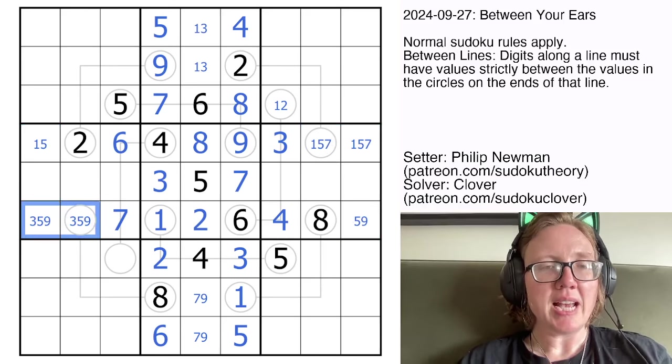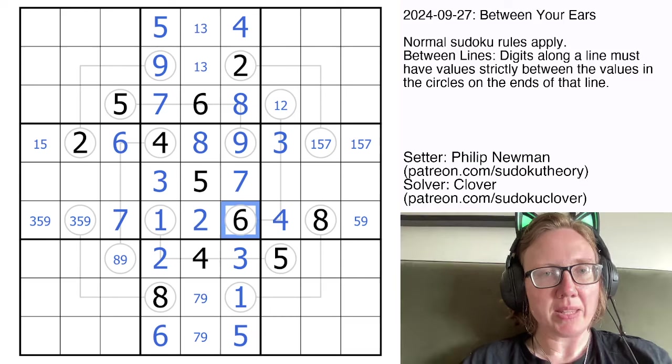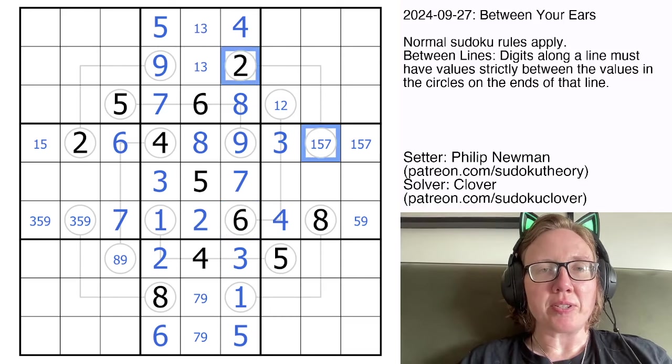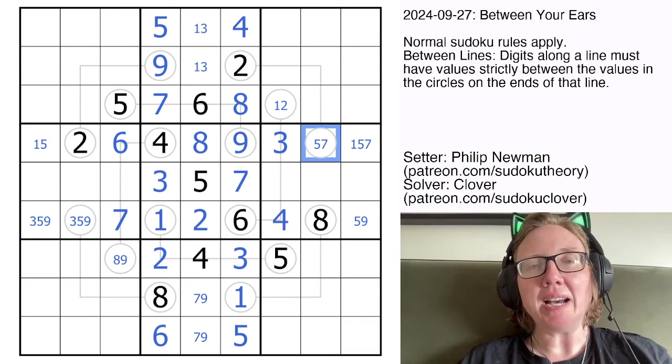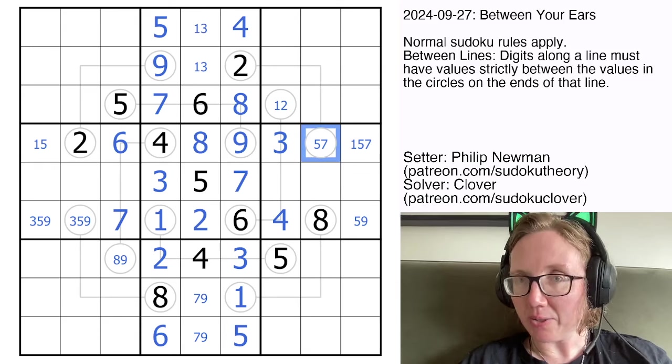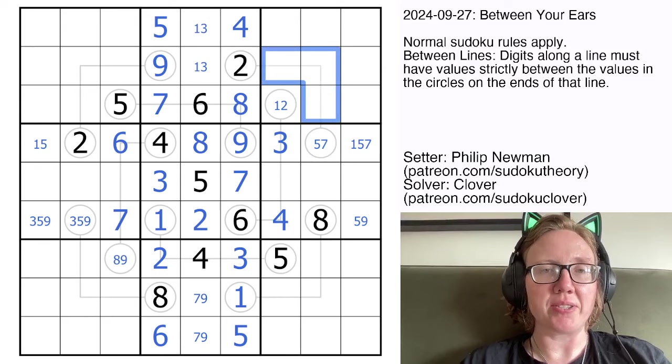We can eliminate 4s there. This is higher than 7, so this will be either an 8 or a 9. These between lines are starting to get finished up, so 1 is way too close to 2 to be the other end of the line, and so is 5 actually, because if we put 5 on the other end of this particular line, we could only ever place 3 and 4 in these cells, so that will be a 7.